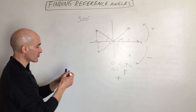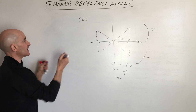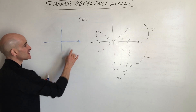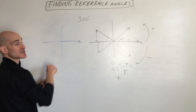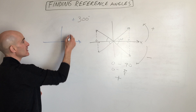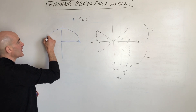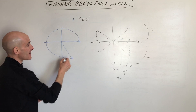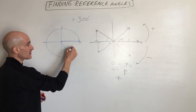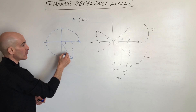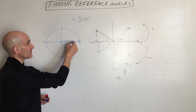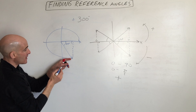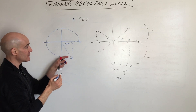For example, with 300 degrees, think of it as a spinner. We start at the positive x-axis and spin counterclockwise because it's a positive angle — 90, 180, 270, 300. There's where it stops or terminates. We drop a perpendicular to the x-axis, and that angle formed between the terminal ray and the x-axis is going to be 60 degrees. You never want to go to the y-axis — that's going to give you the wrong answer.